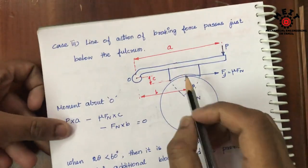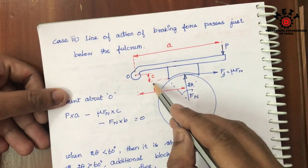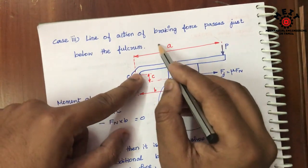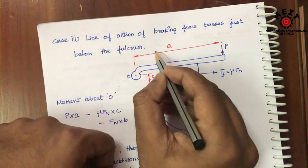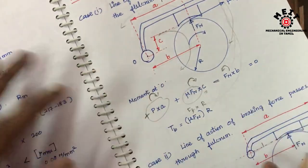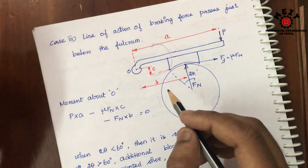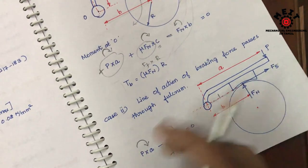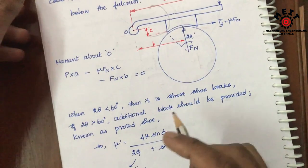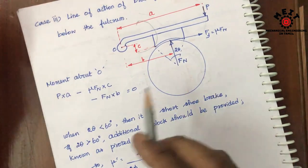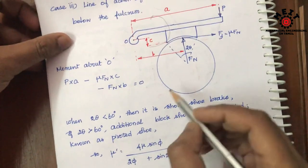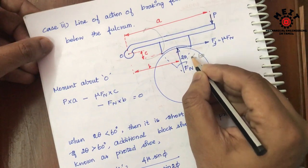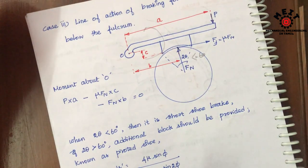Case number 3: the line of action of force passes just below the fulcrum point. Regarding the contact angle condition — when 2θ is equal to 60 degrees or less than 60 degrees, that is not a problem; pressure will be uniform.